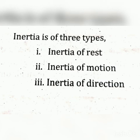First one, inertia of rest. An athlete runs some distance before jumping because all of a sudden the athlete can't change his state from rest to the moving position. So, before taking a jump, he is running for some extent and then he tends to jump. This will help him to jump longer and higher.